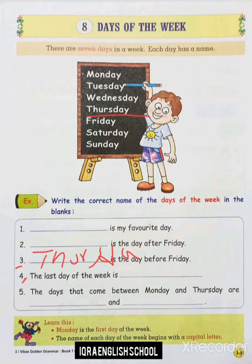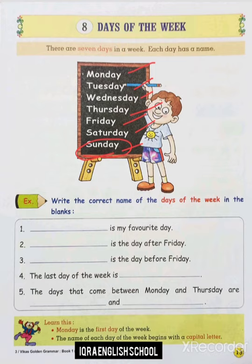Moving to the fourth one: the last day of the week. What is the last day of the week? Can anyone tell me? It's very easy — Monday, Tuesday, Wednesday, Thursday, Friday, Saturday, Sunday — so Sunday is the last day of the week. We have to write here Sunday.